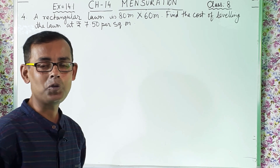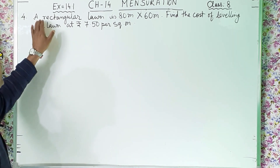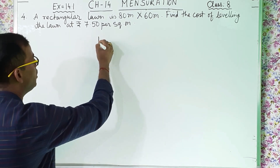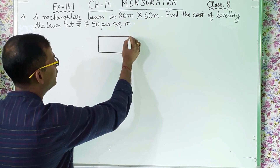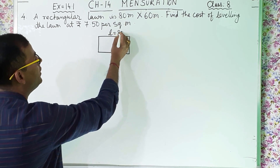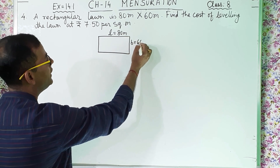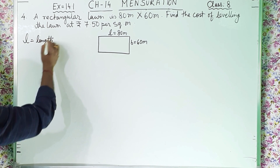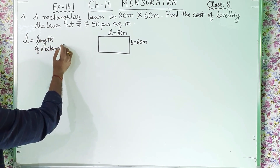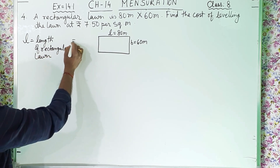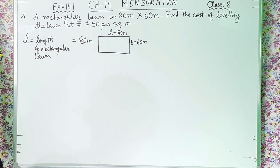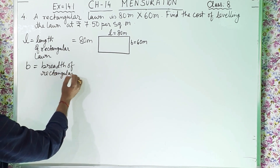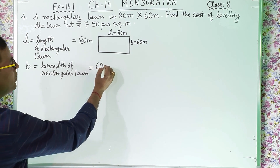In question number 4, a rectangular lawn is 80 meter by 60 meter. So one rectangular lawn is given to us and we will draw it. The length is 80 meter and breadth is 60 meter. So we write L equal to length of rectangular lawn, which is 80 meter.